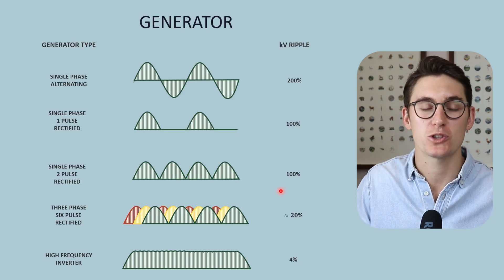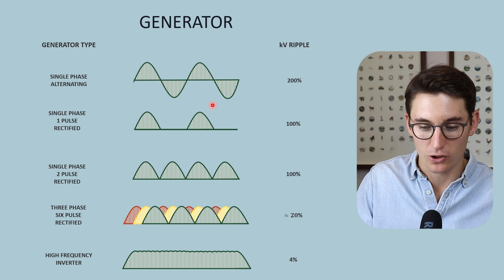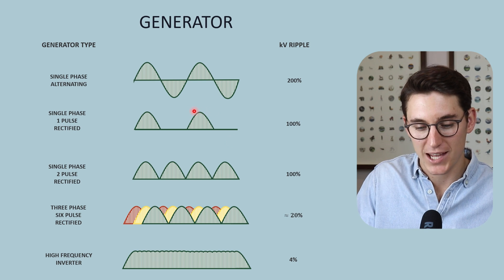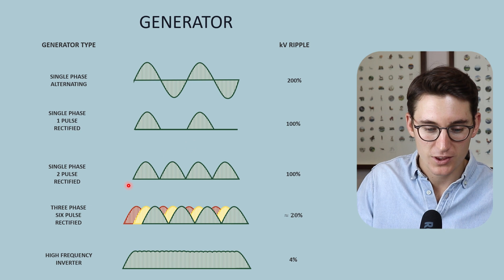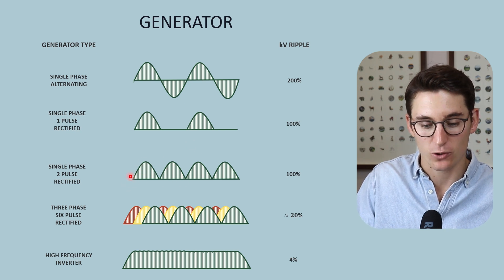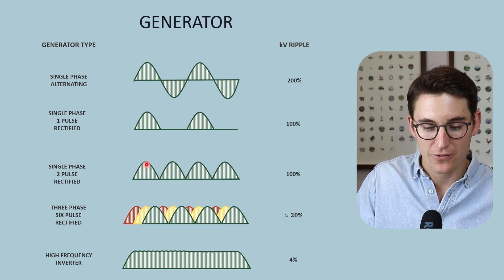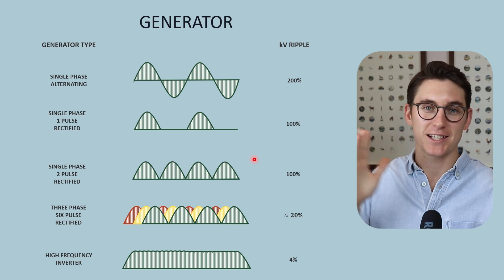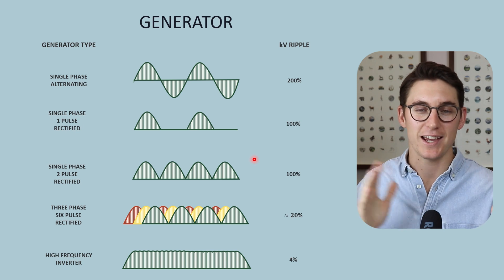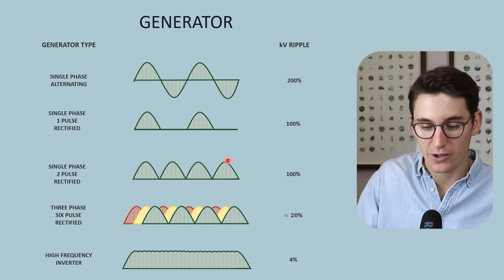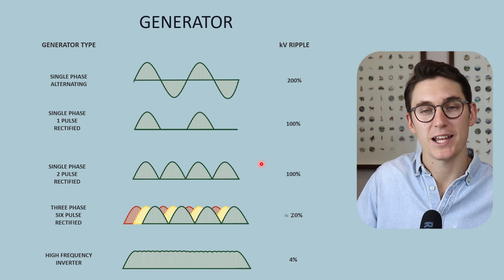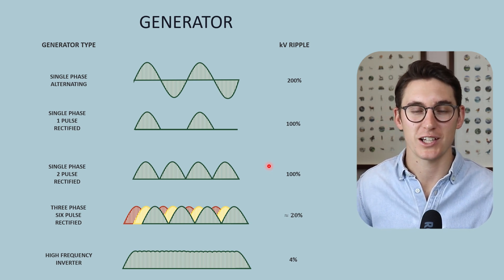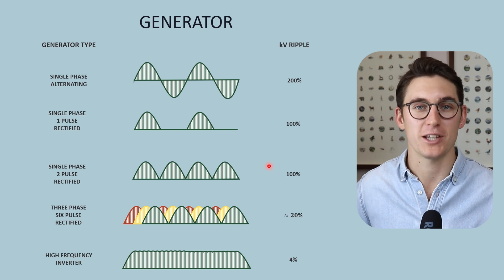When talking about waveform, our KV ripple is the difference between our KVP — our kilovolt peak — and our baseline. With a single phase two-pulse rectified or full wave rectified waveform, we get voltage fluctuations that range from zero to our KVP. The electrons being accelerated towards our anode fluctuate in their energy levels — they will have periods where they reach our KVP, but for most of the time those electrons will have lower energies, resulting in a lower energy x-ray spectrum and lower beam quality.